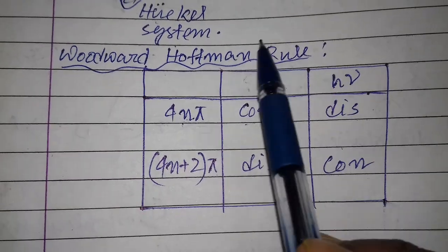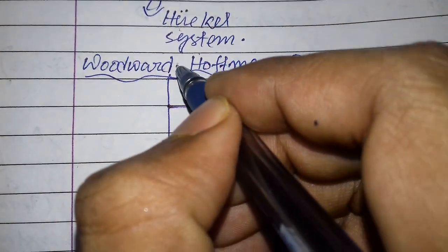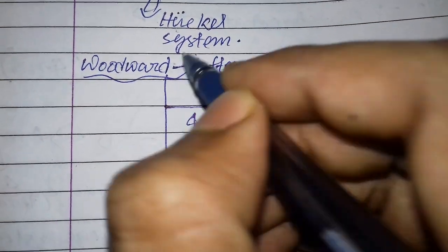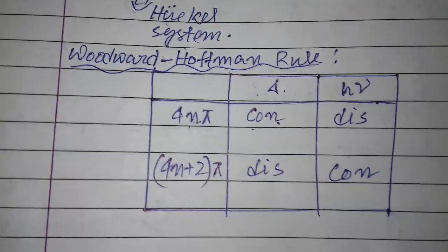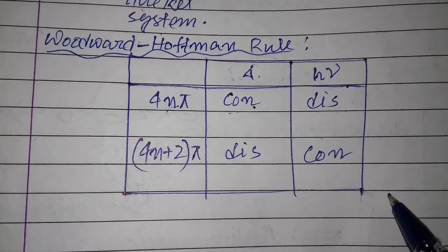This is the Woodward-Hoffmann rule for electrocyclic reactions.